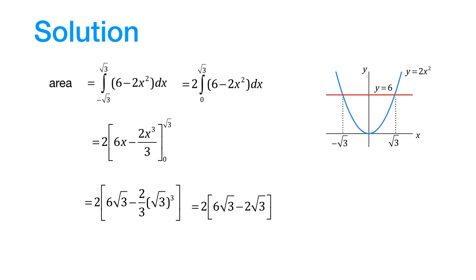Now 6 root 3 minus 2 root 3 is equal to 4 root 3. Therefore, we can write it down like this and this number is 8 root 3. Therefore, the correct answer is option D.